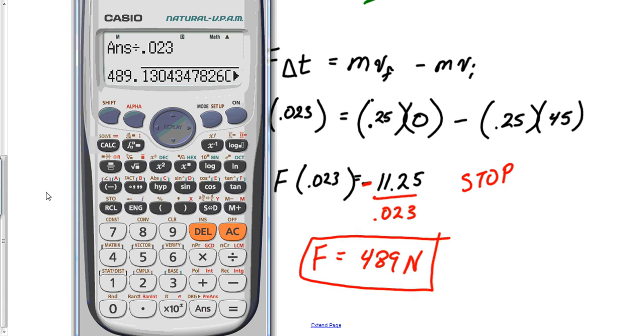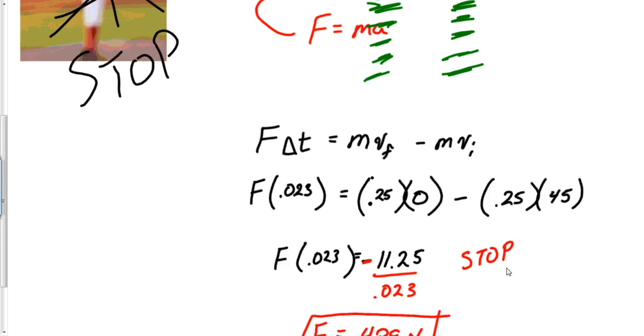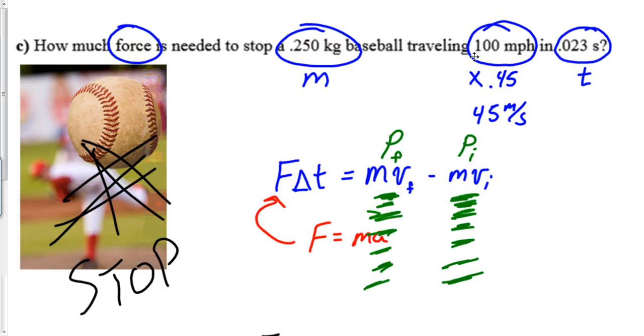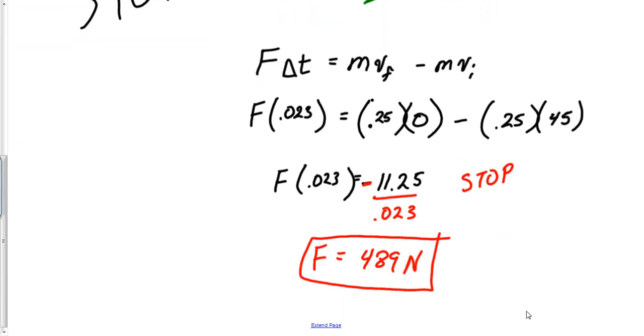Now I got a feeling that y'all are probably going to be like okay, so what is the sig figs on that problem? 100, 0.023, 0.25. What's my sig figs? One. So really this answer should just been 400.